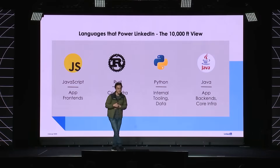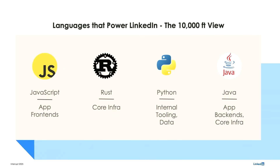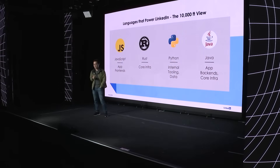Let's start from the ground up and talk about why we chose Python. At a 10,000-foot view, these are the languages we use at LinkedIn. Up until late 2022, Python was really used mostly just for internal tooling, different internal productivity tools, big data applications — your PySpark, offline jobs. But Java was used to build the vast, overwhelming majority of our business logic.